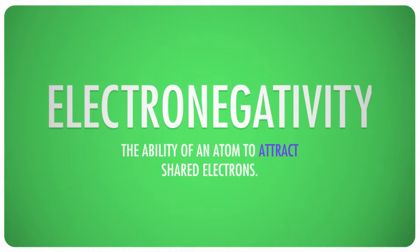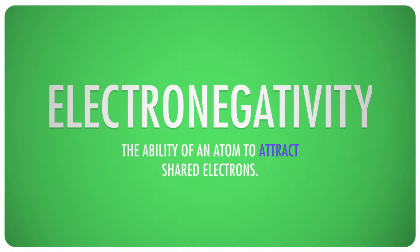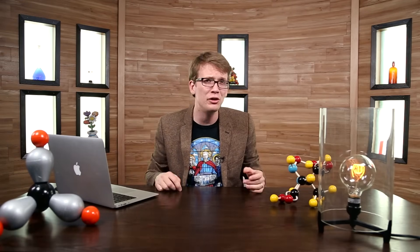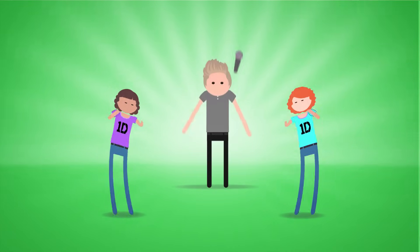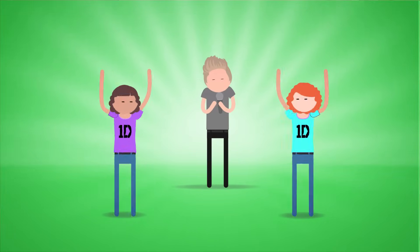Electronegativity is usually thought of as how much an element wants electrons around it, but I think it's more about how much electrons want to be near that element. If electrons were 13-year-old girls, fluorine would be Niall Horan. They'll do anything just to be near it. Why? Some simple periodic trends.